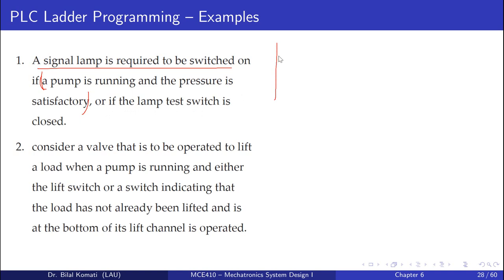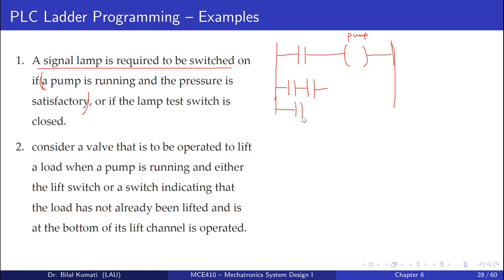We can simply say we should activate the pump output, which is actuated using a certain switch. Then, if the pump is actuated AND the pressure is satisfactory — we have a sensor that indicates the pressure — OR the lamp switch is closed, we will turn on the lamp. This is the OR condition in the ladder diagram.